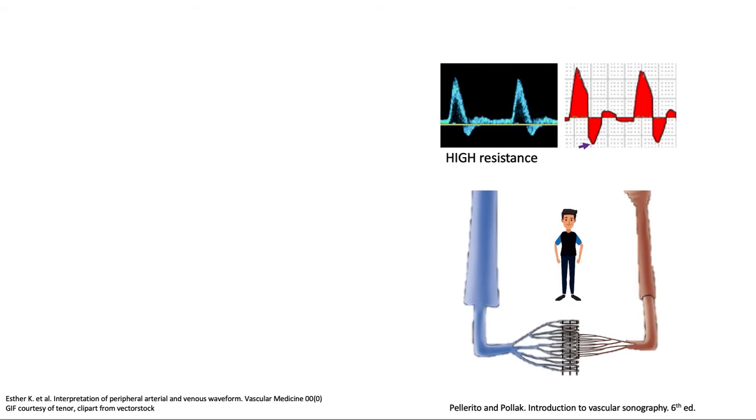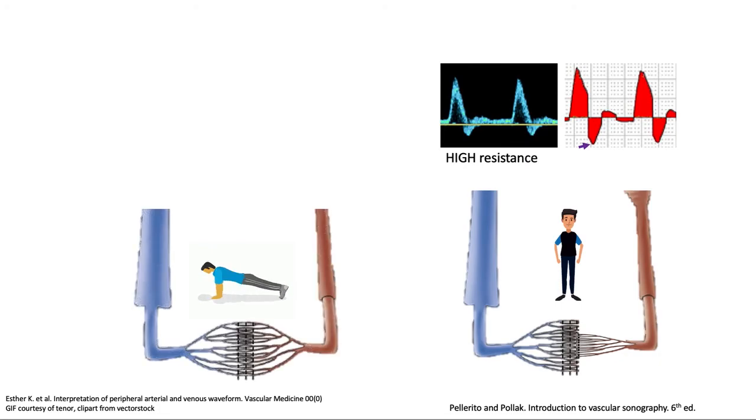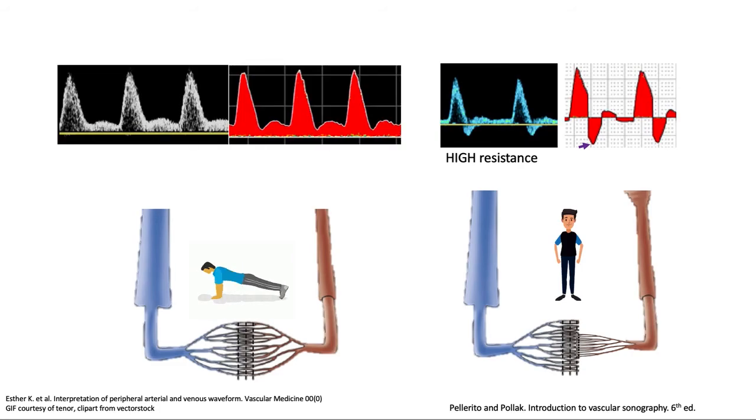Now what if the patient or the person would exercise or is subjected to warming? Now in this case, the muscles now need more flow. The arterioles would now open and therefore there will be a much smaller reflected wave which no longer dips here below the baseline. This type of waveform is now known as a low resistance or decreased resistance waveform.